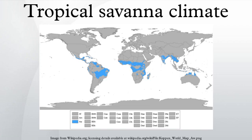Tropical savannah climates are most commonly found in Africa, Asia, and South America. The climate is also prevalent in sections of Central America, northern Australia, and southern North America, specifically in sections of Mexico and the state of Florida in the United States. Most places that have this climate are found at the outer margins of the tropical zone, but occasionally an interior tropical location also qualifies.